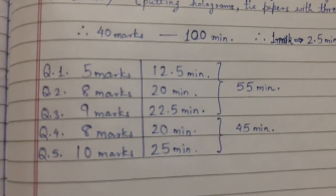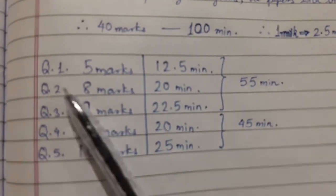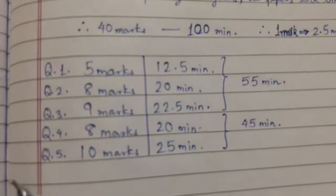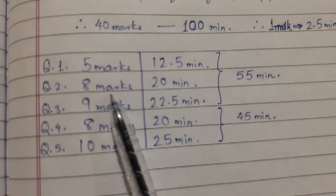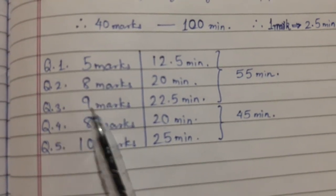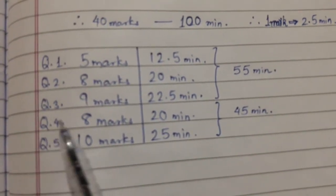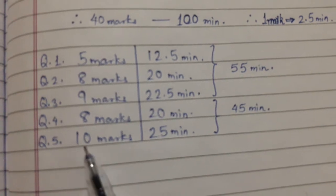And this is the question and the allotted marks. So for question number one, five marks, question number two, eight marks, question number three, nine marks, question number four, eight marks, question number five, 10 marks.